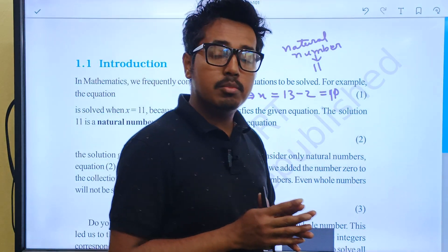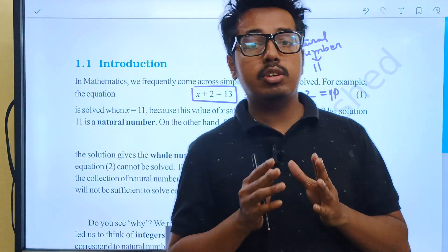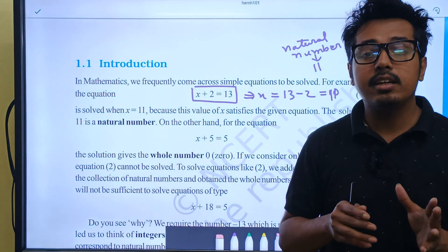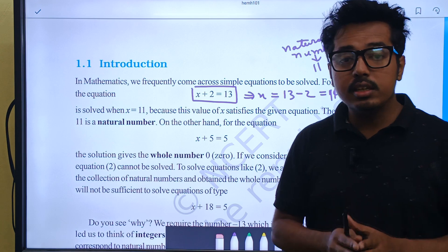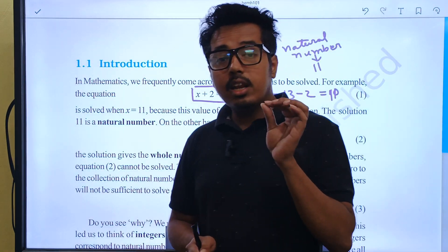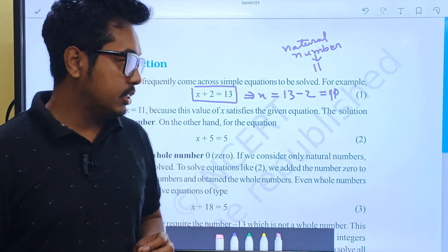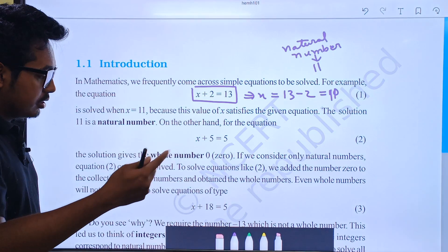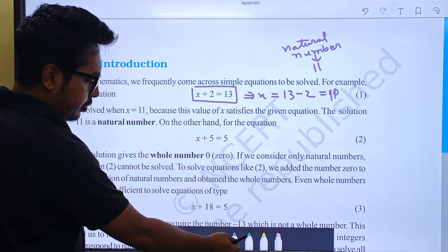We can say that natural numbers are infinite — we cannot calculate the total number of natural numbers. Now let's do another equation.